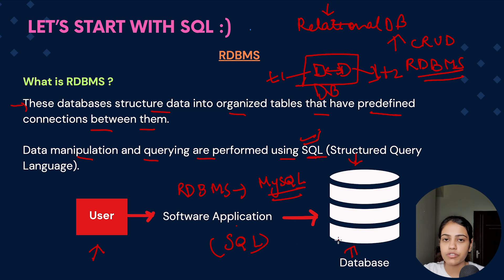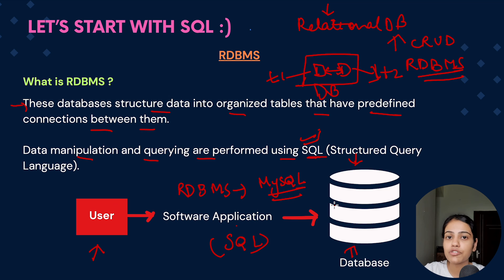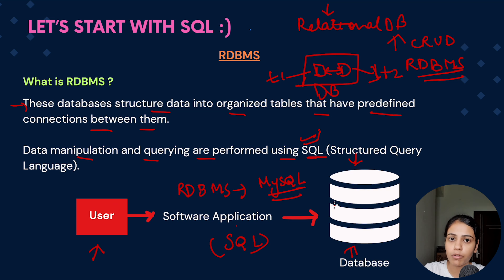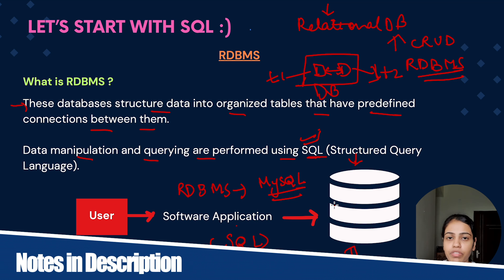This is the database on which we perform the query. So in one word, relational database management systems are the softwares which help us manage the data present in relational databases. In a relational database, data is stored in the form of tables and they have some connections or relationships between them.